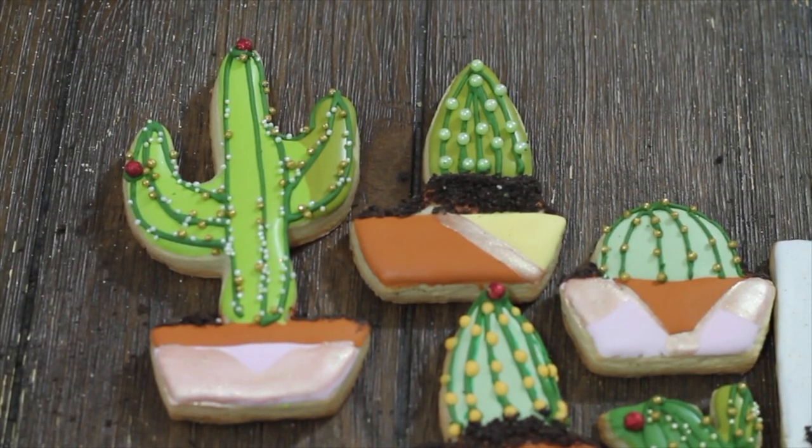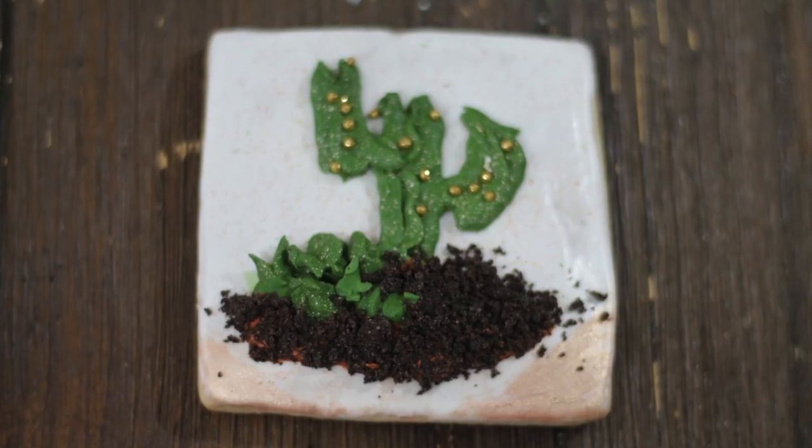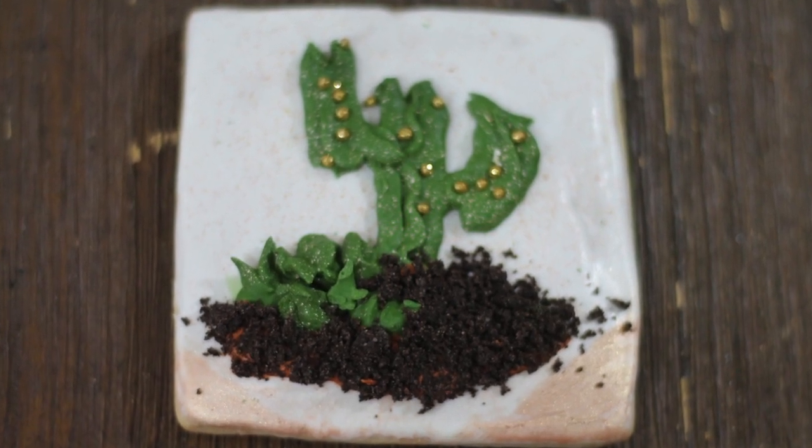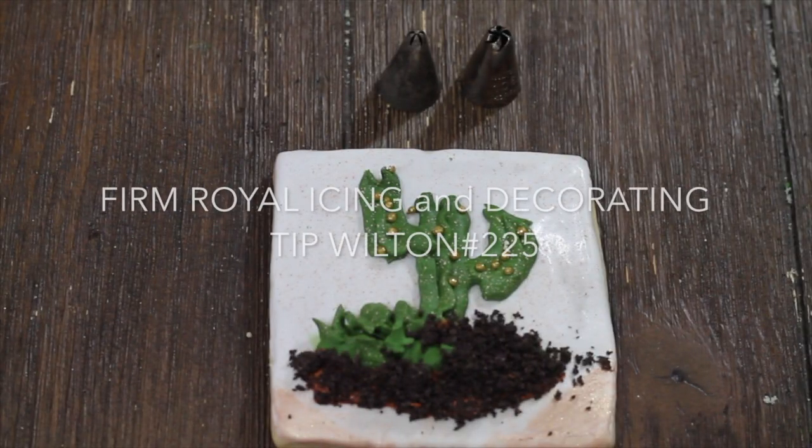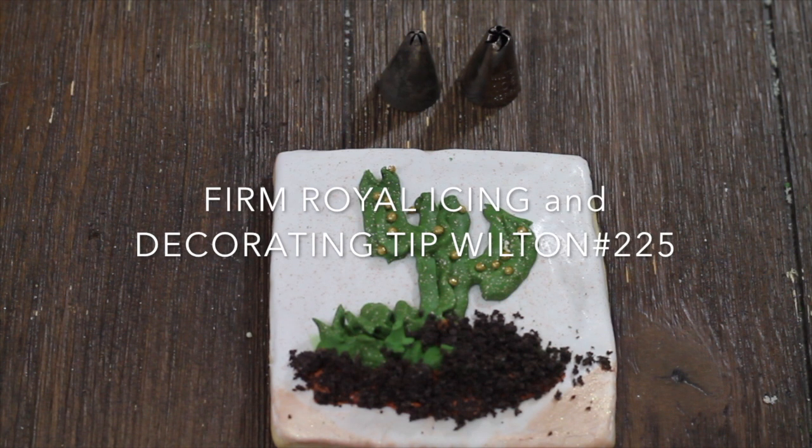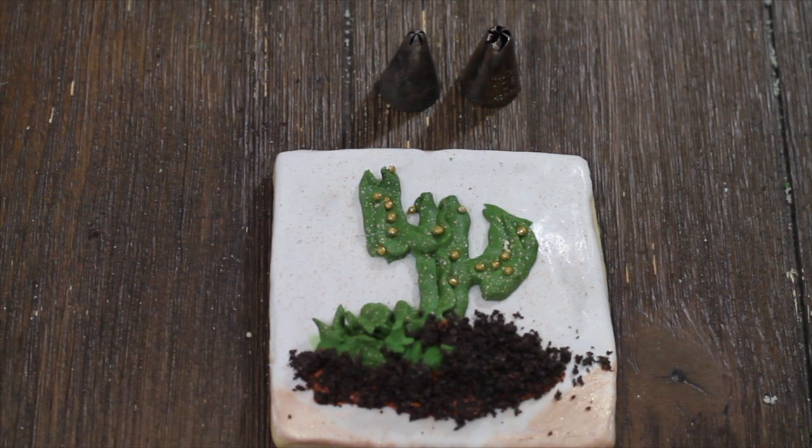For the cactus on the left of your screen, I'm going to leave you a card so you can see the tutorial. For these other cactus, you can use your firm consistency icing and a decorating tip number 225 of Wilton.